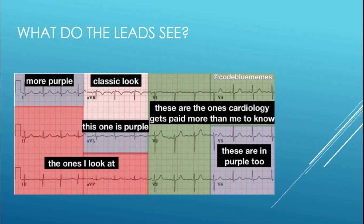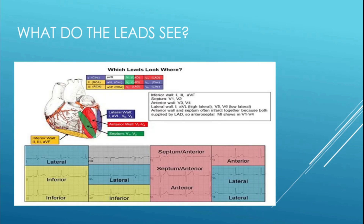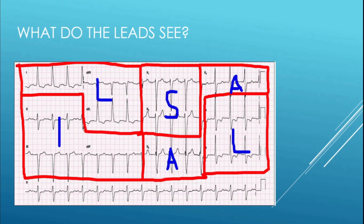When you look at a 12-lead you can see what each lead looks at — it's a little confusing, but luckily I have a mnemonic. The mnemonic is 'IC ALL LEADS.' The I is your inferior leads: 2, 3, and AVF. C is your septal leads: V1 and V2. A is your anterior leads: V3 and V4. And 'LEADS' is your lateral leads: V5, V6, 1, and AVL.